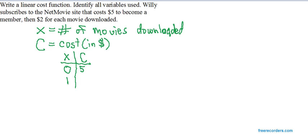What's his cost if he downloads one movie? Well, it's going to be his membership fee plus the $2 it costs to download the movie. If he downloads two movies, his costs are going to be his membership costs plus two times that $2 download fee. If he downloads three movies, his costs are going to be five plus two times three, the $2 download fee times the three movies, and so on.